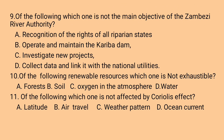Question number nine: of the following, which one is not a main objective of the Zambezi River Authority? A: recognition of the rights of all riparian states, B: operating and maintaining the Kariba dam, C: investigating new projects, D: collecting data and linking it with national utilities. Option A is not the main objective of the Zambezi River Authority — rather, it is the main objective of the Nile River Basin initiative.